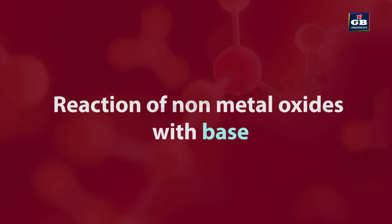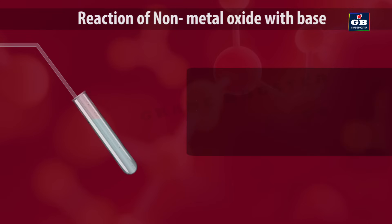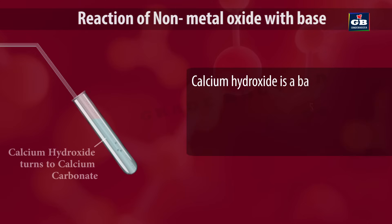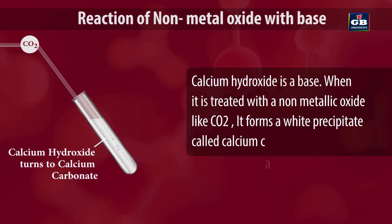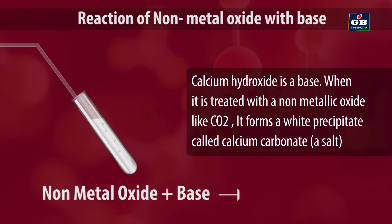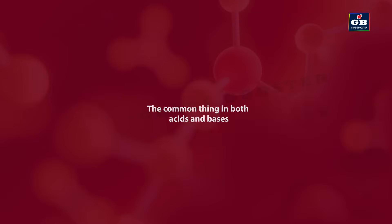Reaction of non-metal oxides with base. Calcium hydroxide is a base. When it is treated with a non-metallic oxide like carbon dioxide, it forms a white precipitate called calcium carbonate — a salt. So when a base is treated with a non-metallic oxide, it produces salt plus water.